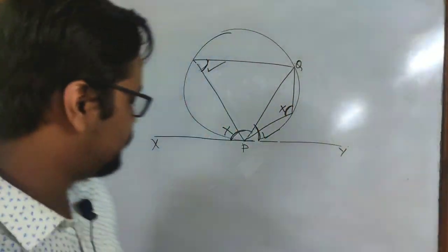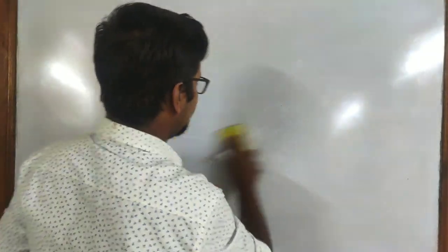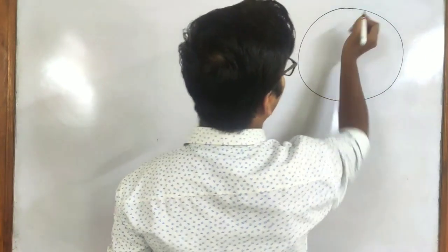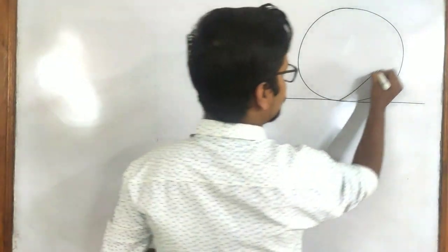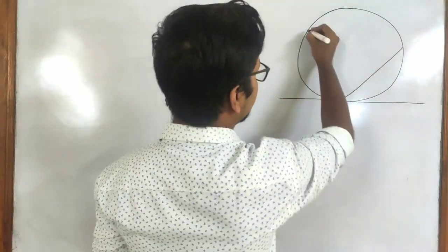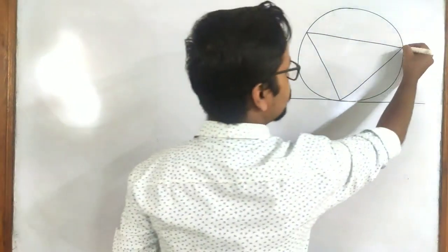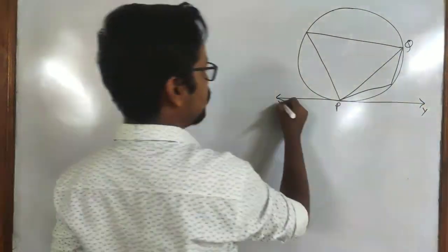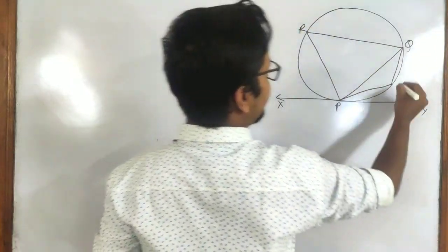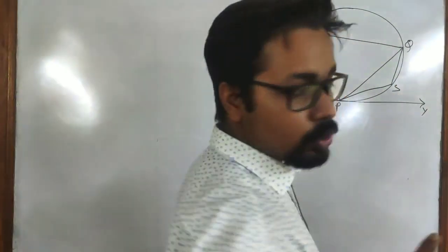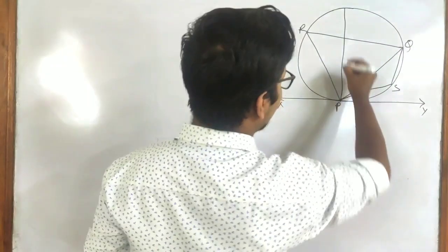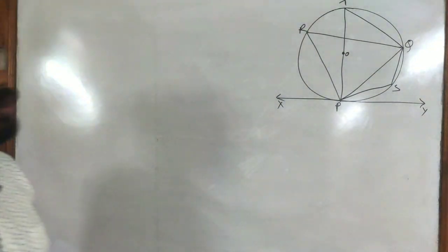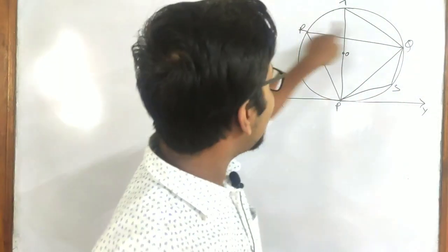Now we need to prove this. Let us draw the same diagram: we have a tangent, a chord PQ, one angle at the chord on the larger segment, and another angle on the smaller segment. Let the tangent be XY, the points on the chord be P and Q, and let R and S be points on the circle. We also draw diameter PT through center O.